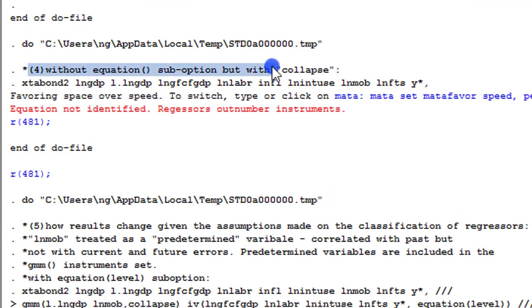Simulation 4, without equation, sub-option, but with the collapse option. After executing this command, I got this error message from Stata, which says that my equation is not identified because my regressors outnumber the number of instruments. If I'm particular about working on this model, so what will I do? I may have to reduce my regressors and also change some instruments. That is if I'm really keen about working on this particular model.